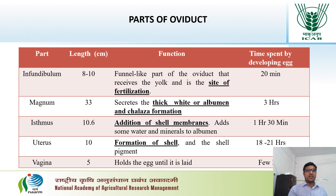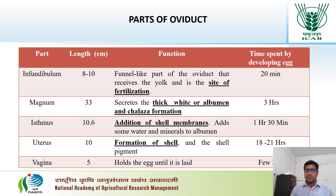The second part is the magnum. It is the largest part of the oviduct, around 33 cm in length, and the major function is the secretion of the white, or the albumin. The developing egg stays around 3 hours in the magnum.